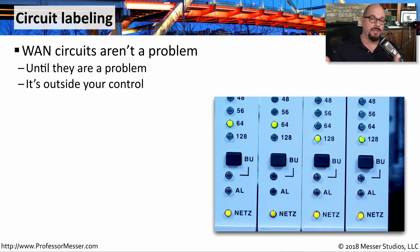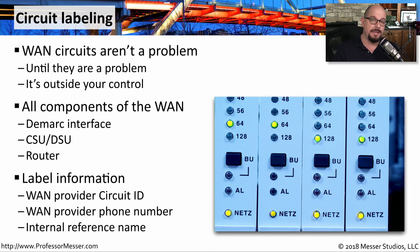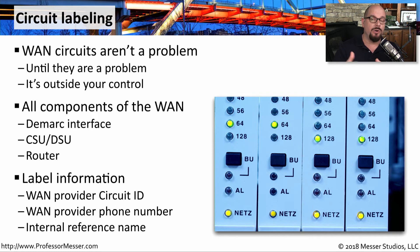Most organizations have a number of WAN circuits coming into the building, so it's a good idea to label all of those circuits as well. WAN circuits can operate normally and then suddenly fail — not because of something inside your building, but something between your site and the other one, which you have no control over. You'll need to document exactly which WAN circuits may be having a problem: the DMARC interface for that circuit, the associated CSU-DSU connected to that DMARC, and perhaps the router connected to the CSU-DSU. You want to know the circuit ID, the WAN provider and their help desk phone number, and an internal reference name. If you have a monitoring system, include all of this information so that when an alert is created, you have all the details needed to communicate with the WAN provider.